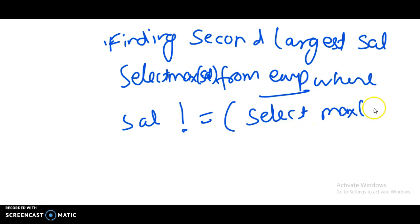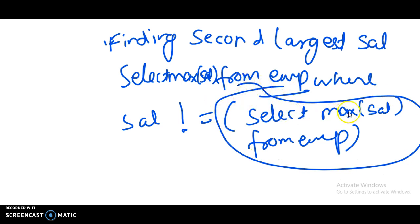max salary from EMP. This will return only one thing. Always remember, aggregate functions like max, minimum, average, count - these will return only one single row. This will return only the maximum value of the table.